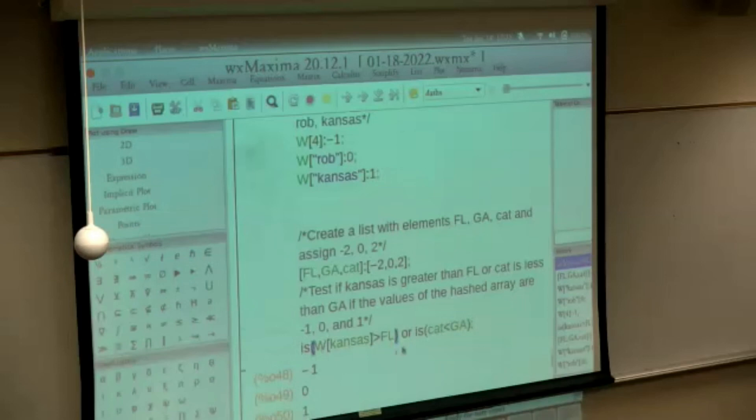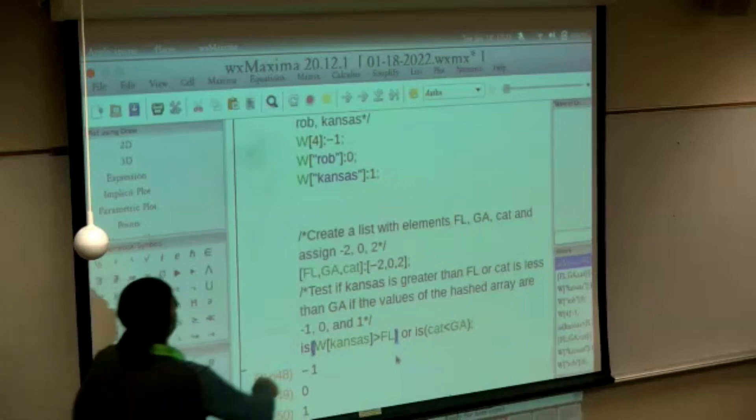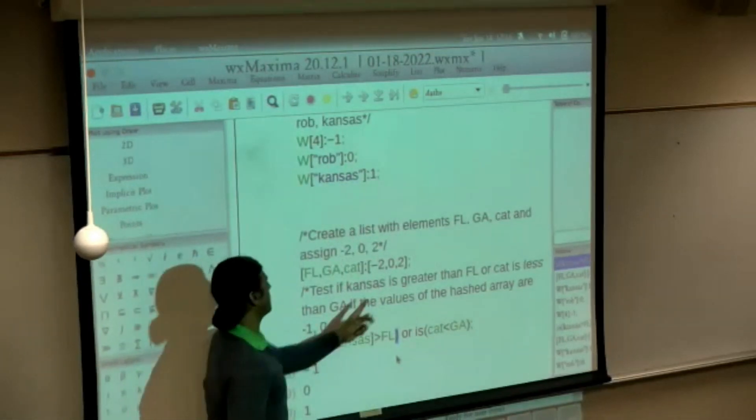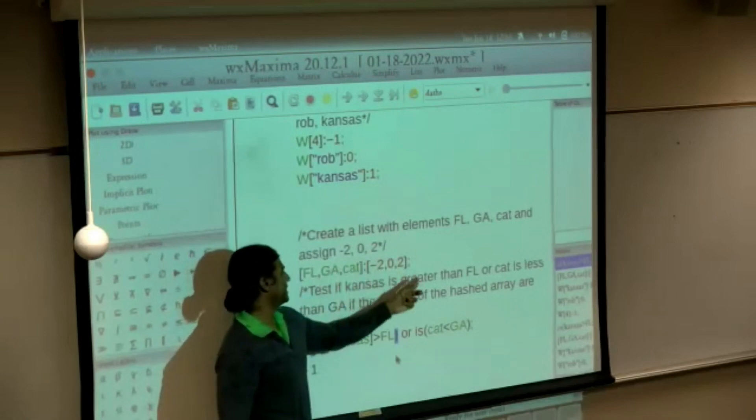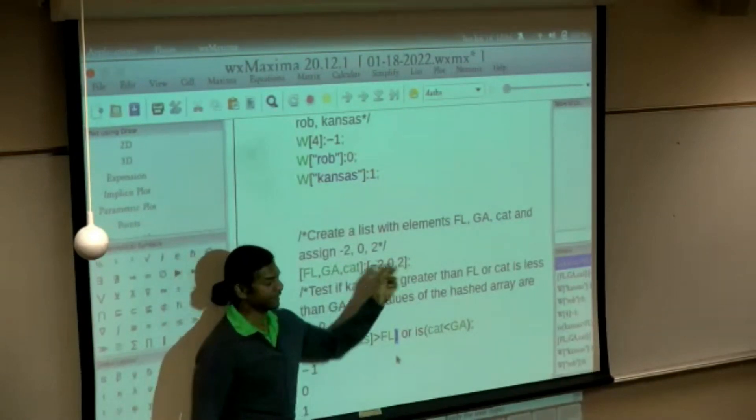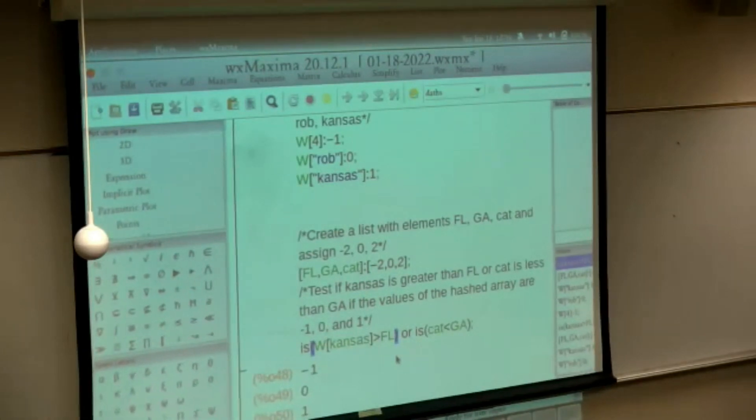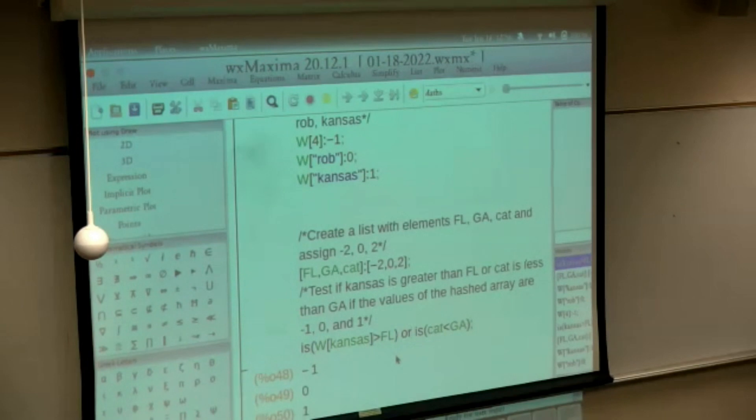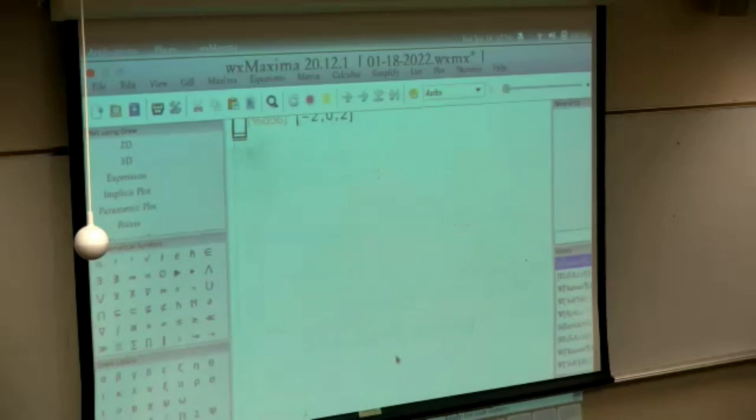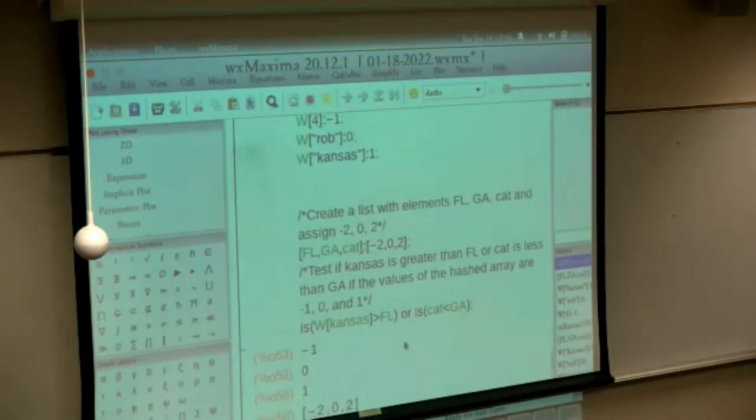So it's w of Kansas, but we don't have to do it for Florida because here I've defined it using the array, but there I'm directly assigning minus two to Florida, zero to Georgia, and two to Kansas. So w of Kansas.